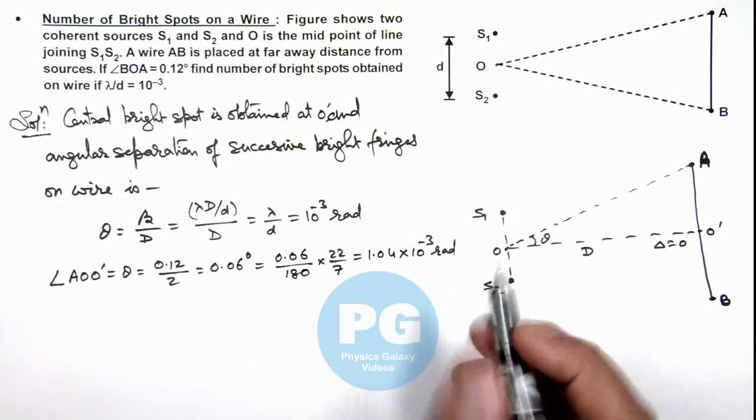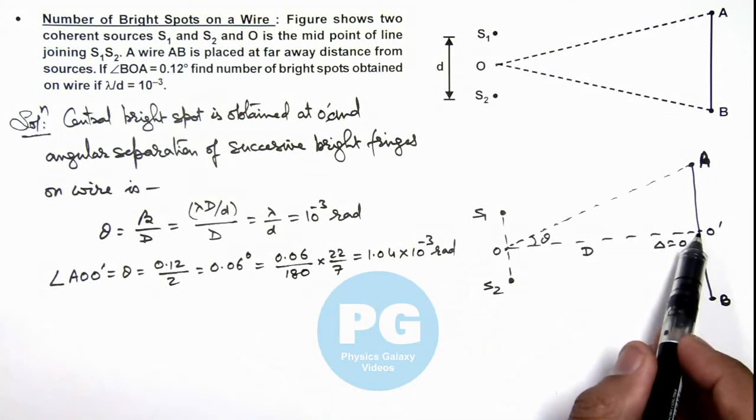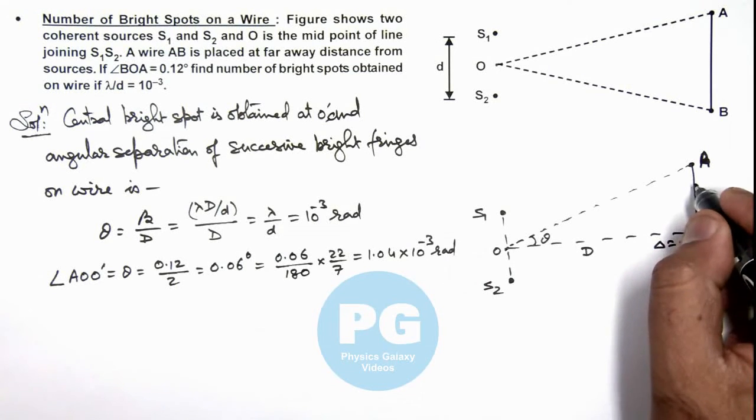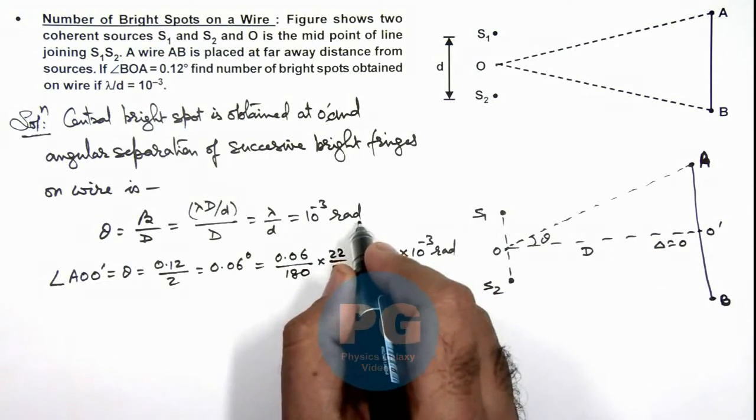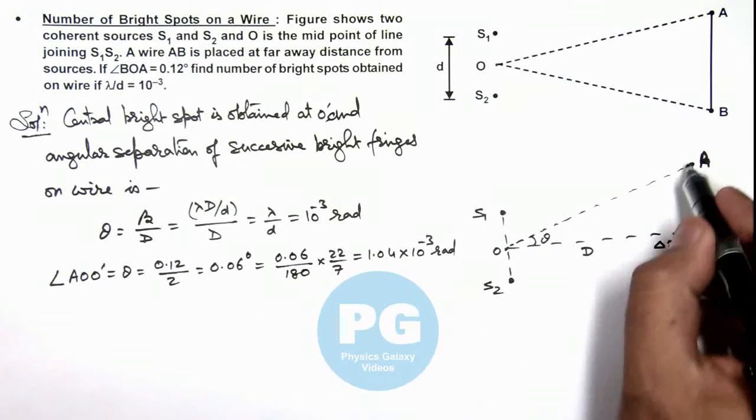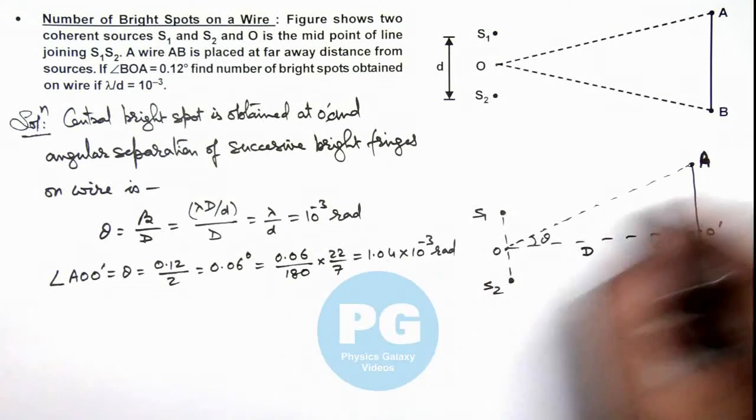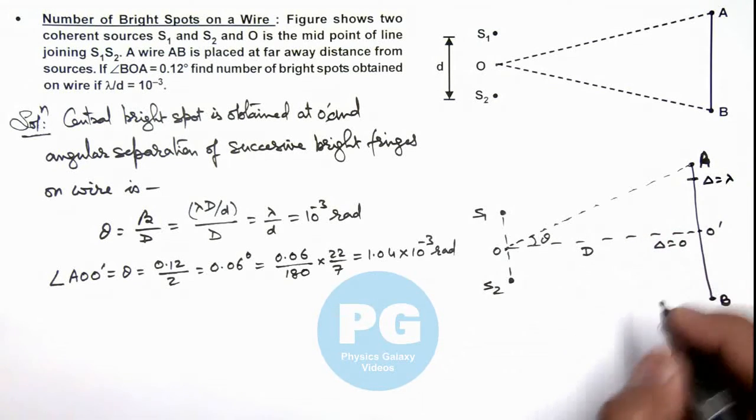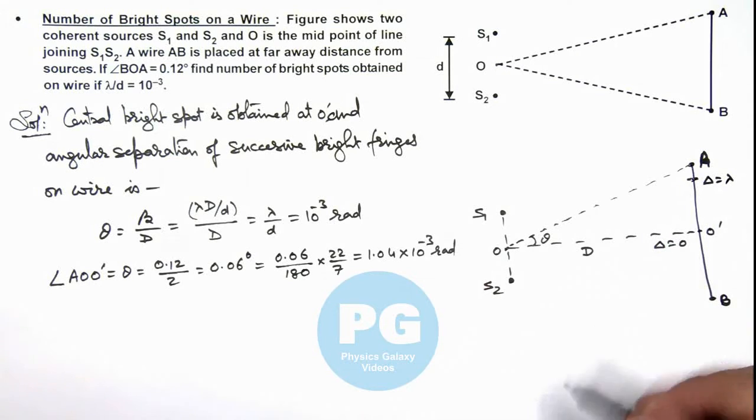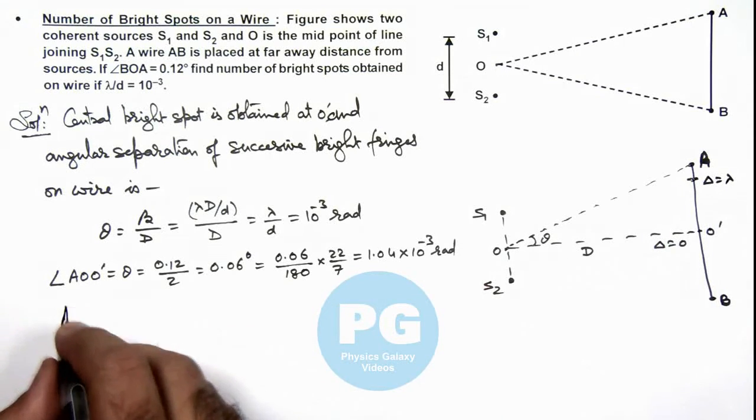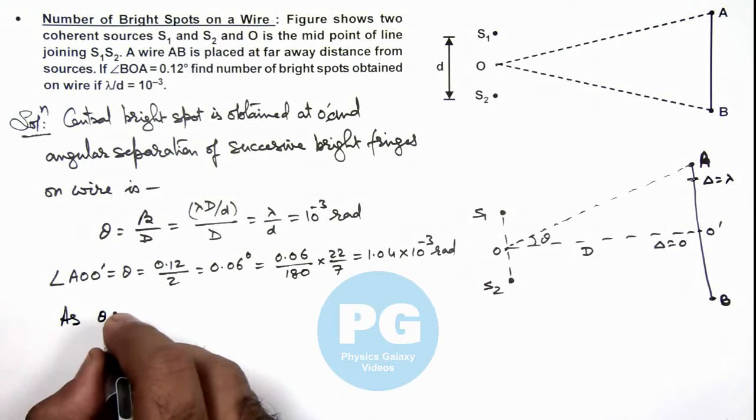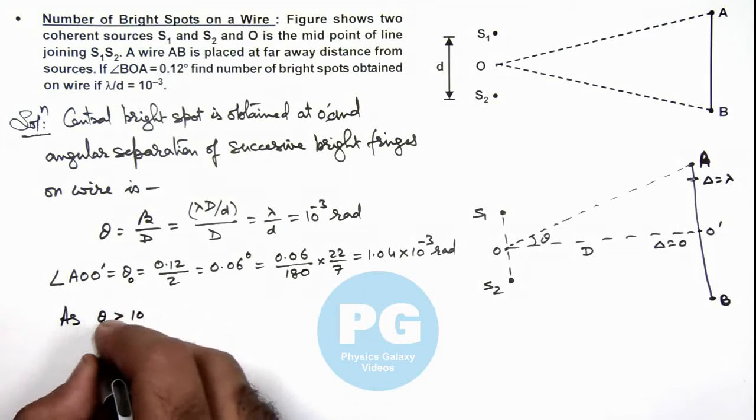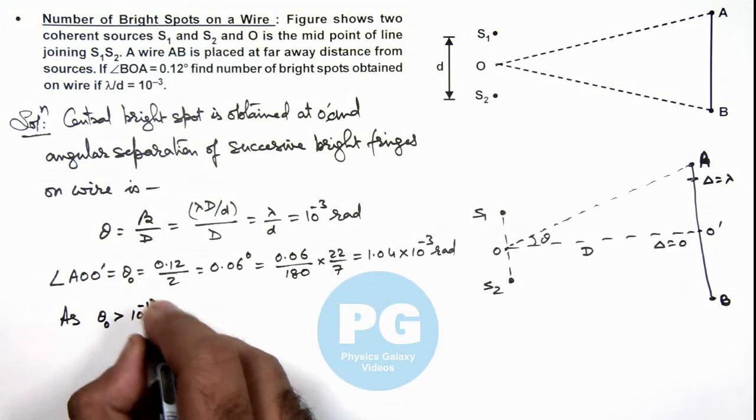So here we can see as at point O' a bright fringe is obtained, so first bright fringe will be obtained where path difference is λ at an angular separation 10⁻³ radian, and the angular separation of point A is slightly higher than this. So we can say this will be the point where we can say path difference will be λ and here another bright fringe is obtained. So we can write, as θ₀ is greater than 10⁻³ radian.